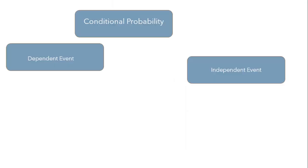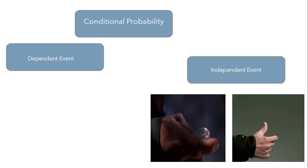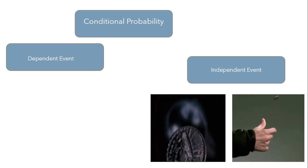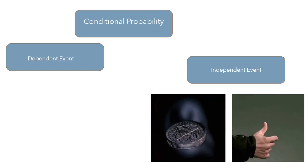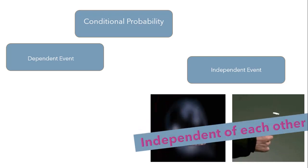Let's take an example where we'll understand conditional probability categorized as dependent and independent events. When I say independent event, it means each event is not affected by any other events. If I toss two coins, each toss is a perfectly isolated thing and what it did in the past will not affect the current toss, so the chances of getting a head or tail will always be 50%, and we can say that each toss is an independent event.